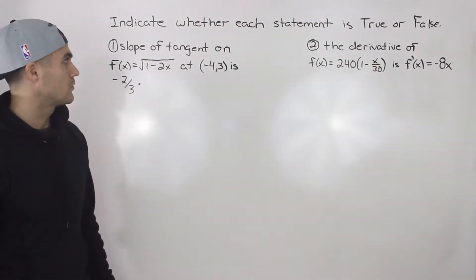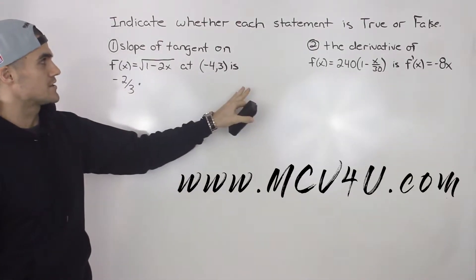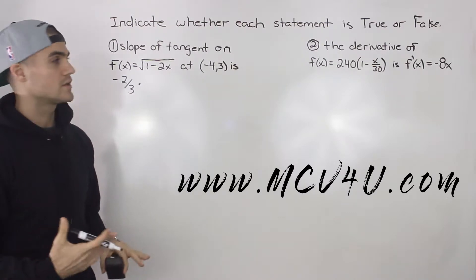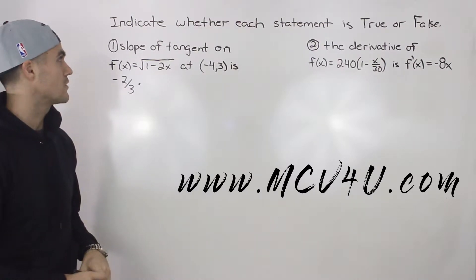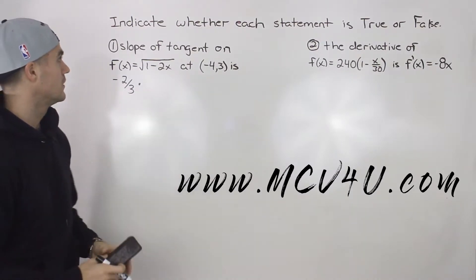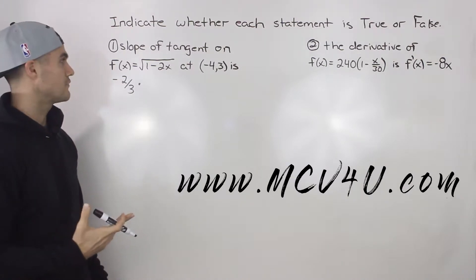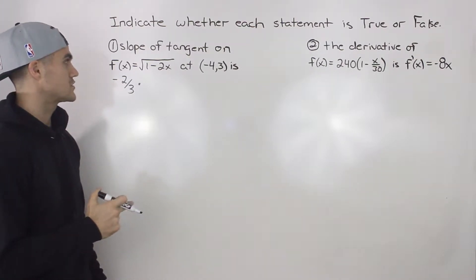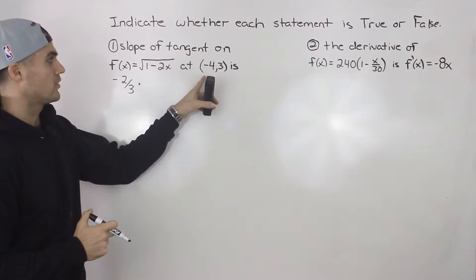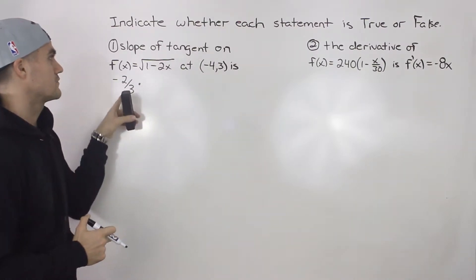Welcome back, everybody. In this video, we're going to take these two statements here and determine whether each is true or false. So let's start off with this first statement. We got the slope of the tangent on f(x) equals the square root of 1 minus 2x at the point (-4, 3) is -2/3.